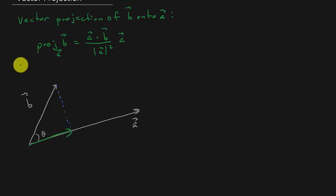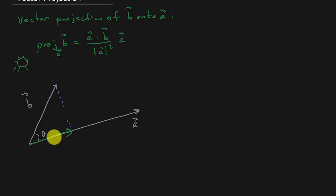Basically what you can do is look at it like this: say there's the sun up here, and if the sun's shining, it's going to cast a shadow down here, and this is going to be your vector. And what the vector projection is giving us — think about it — are we going to get a single number as an answer, or are we going to get a vector as an answer?